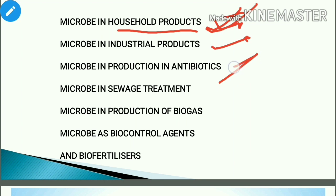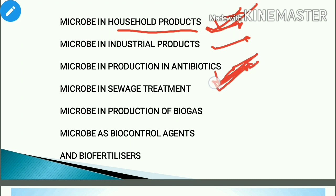Microbes also play a role in making wine and whiskey. We can also make antibiotics using microbes. Alexander Fleming discovered the antibiotic penicillin from the fungus Penicillium notatum. This led to the development of effective antibiotics.